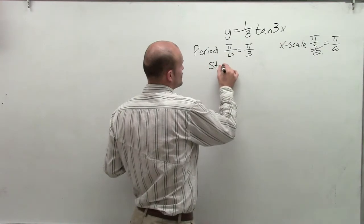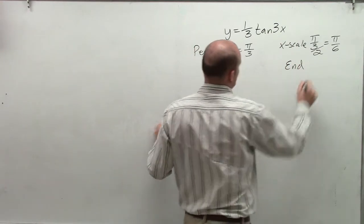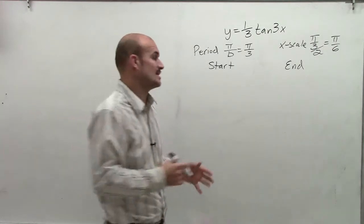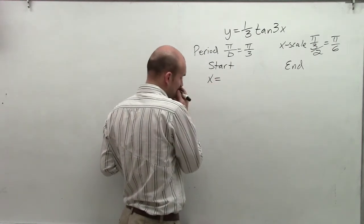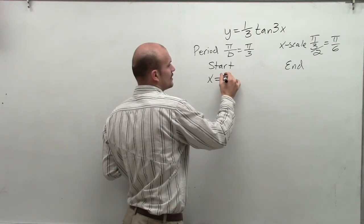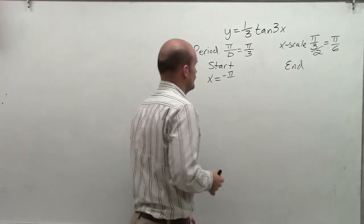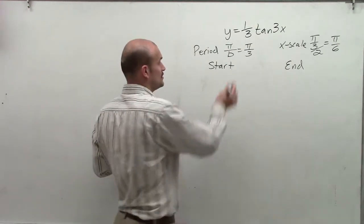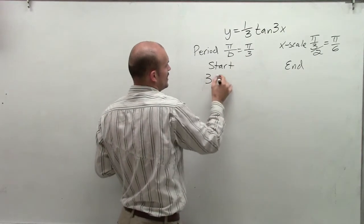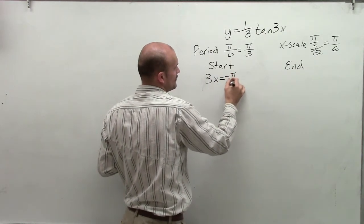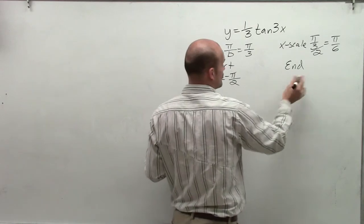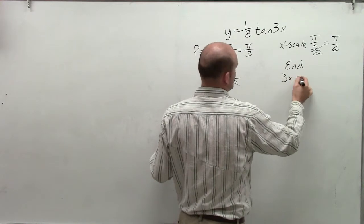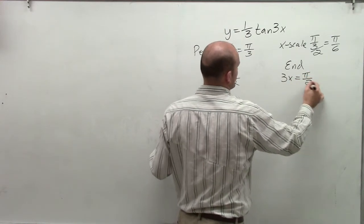The next thing is I want to find the start of my function, or my initial period, and the end of my initial period. Remember, the tangent function is different than sine and cosine. Our start, rather than equaling 0, is going to equal negative pi over 2. So you're going to take inside your function and set that equal to negative pi over 2. And our end, rather than setting equal to 2 pi like sine and cosine, is now going to take inside our function and set that equal to positive pi over 2.